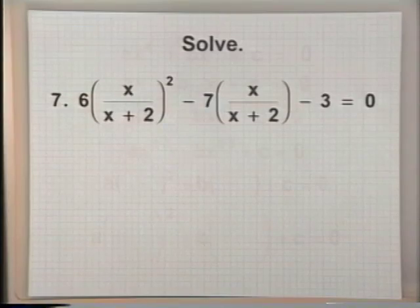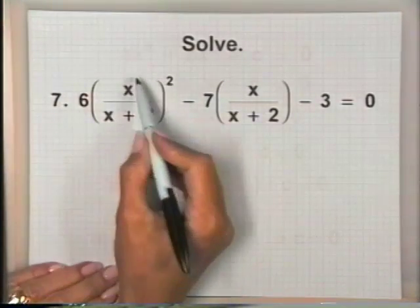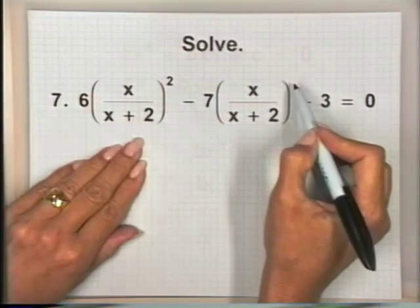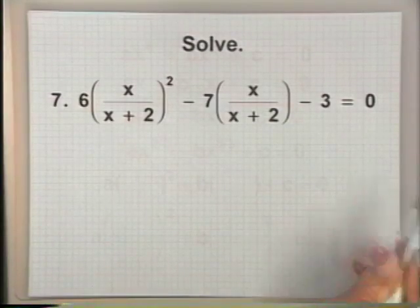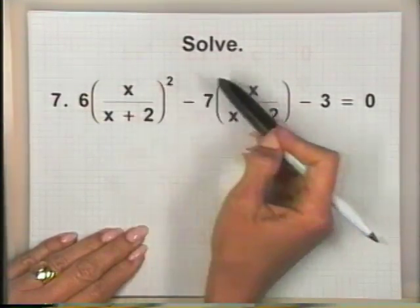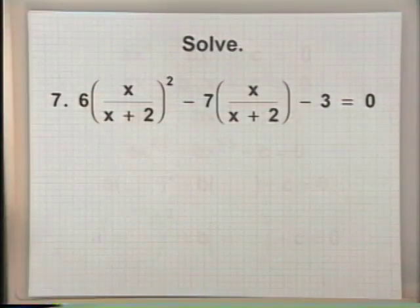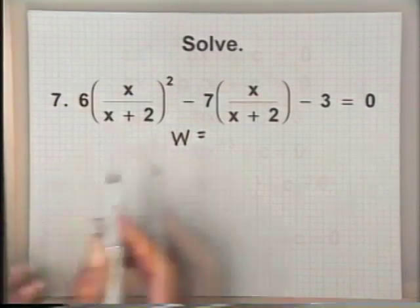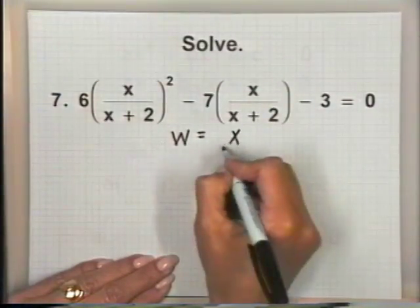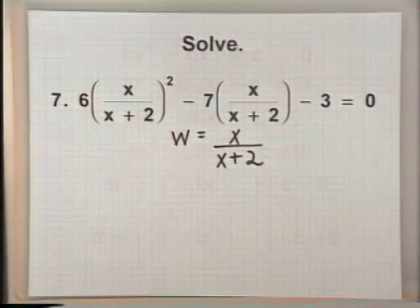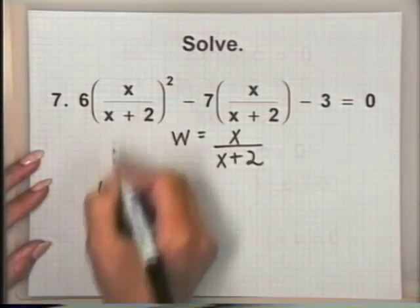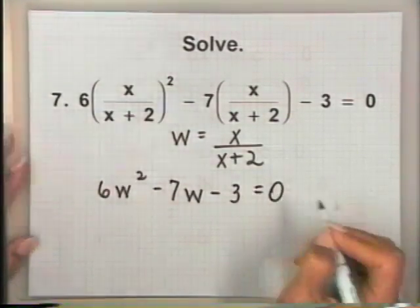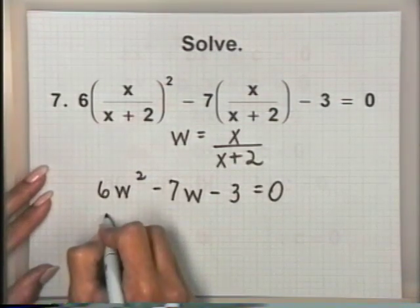For problem number 7, notice that the variable part x over (x plus 2) is squared in the first term and understood to be to the first power in the second term. So this is already in quadratic form — I just need to define w. We let w equal x over (x plus 2), the variable expression in the middle term. Substituting gives 6w squared minus 7w minus 3 equals 0.